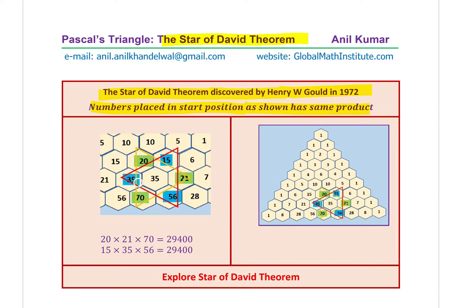If you put these numbers at the corners of the star, the product of three numbers in one triangle is the same as the product of the other three in the other triangle. The number 35 is right in the center. Around it we have 20, 15, 21, 56, 70, and 35. If I multiply the numbers in green — 20, 21, and 70 — I get 29,400. On the other hand, multiplying 35, 15, and 56 gives the same product. The product is the same for numbers positioned in the star.